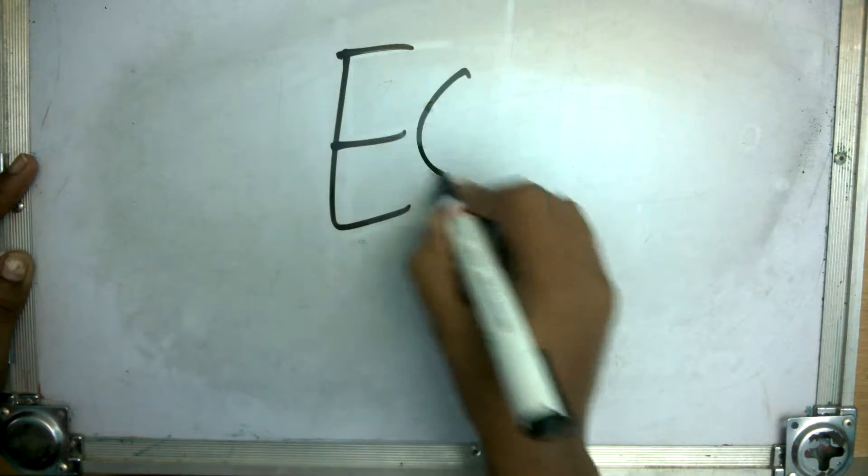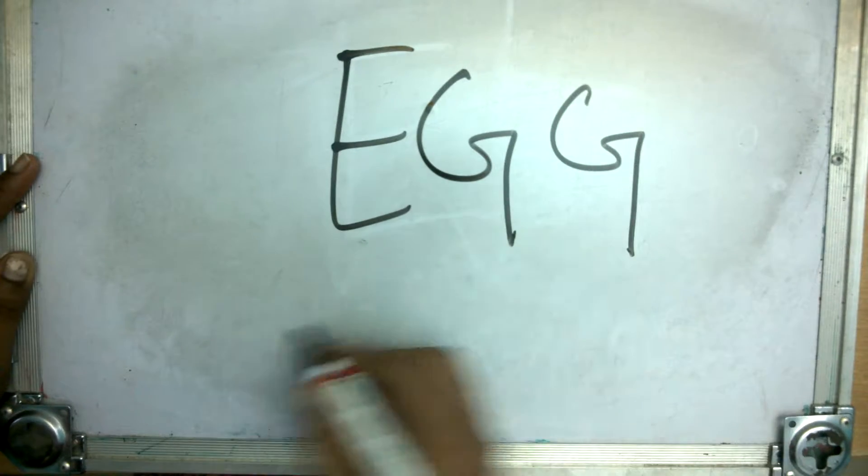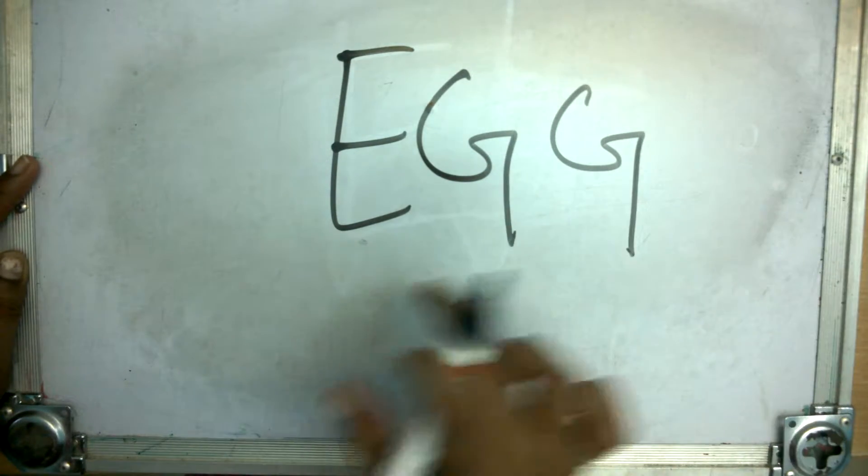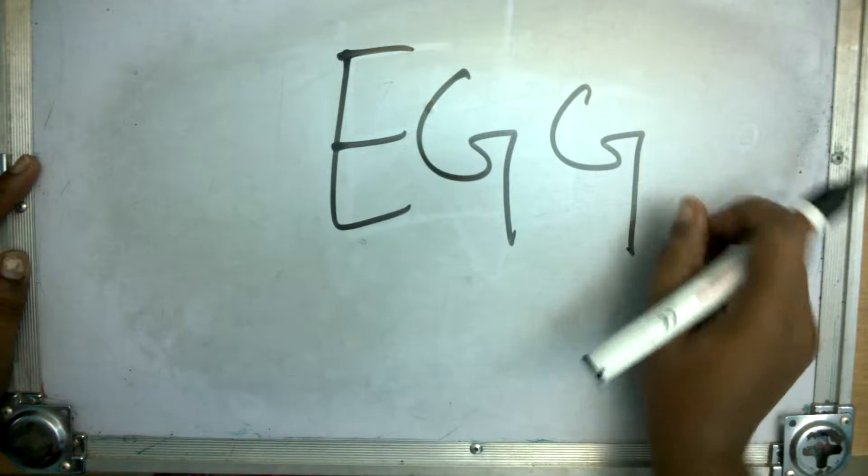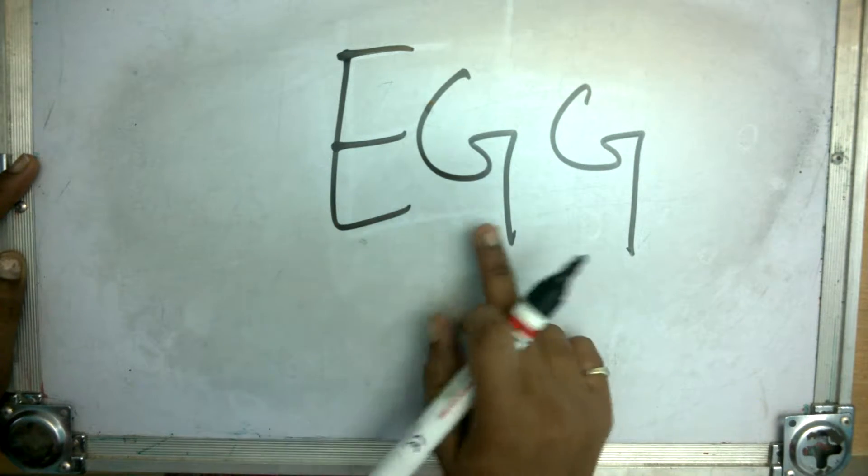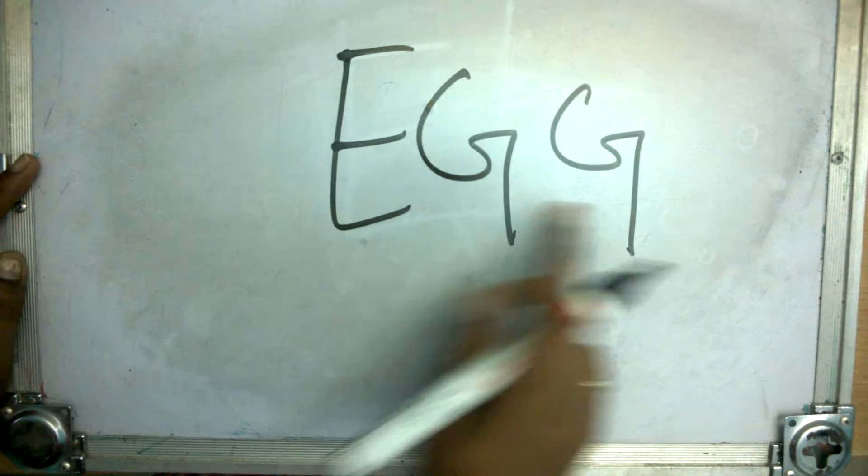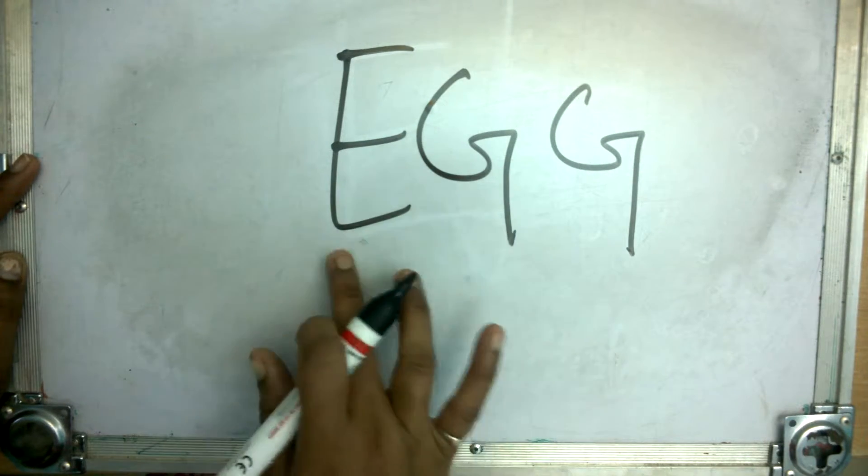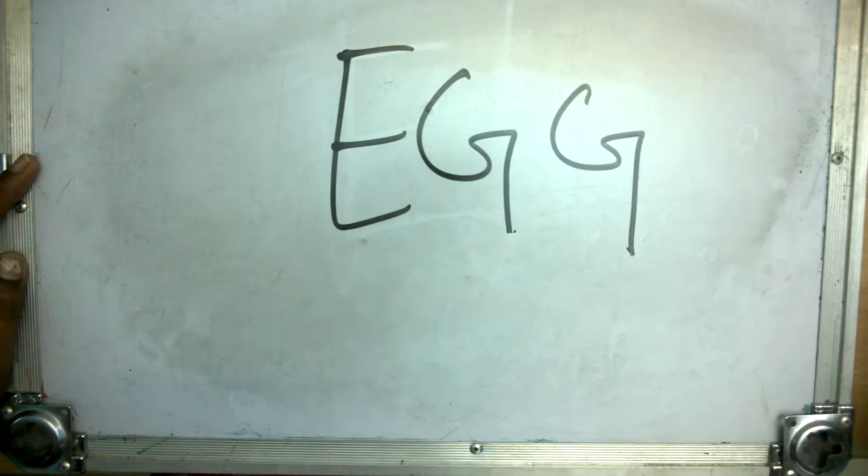First one E, G, G, egg. E sounds A, G sounds G, G sounds K. A, K, egg, A, K, egg. Got it?